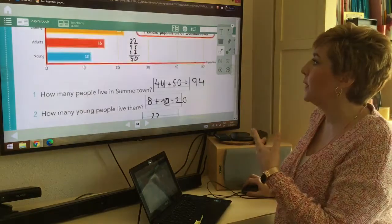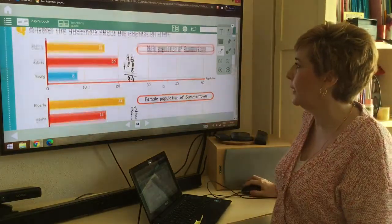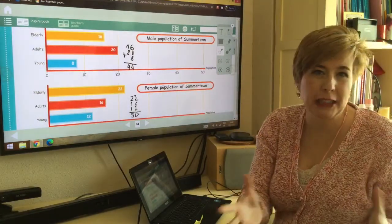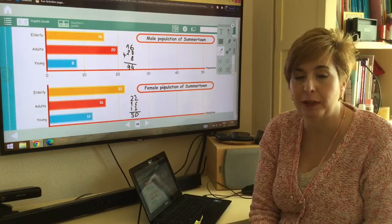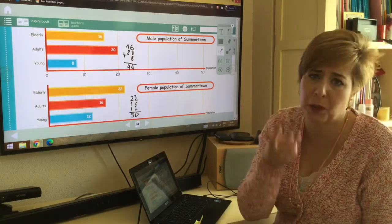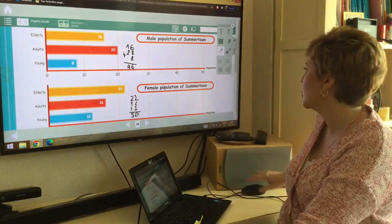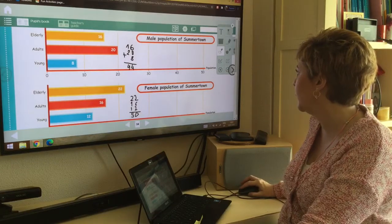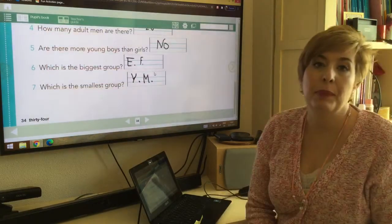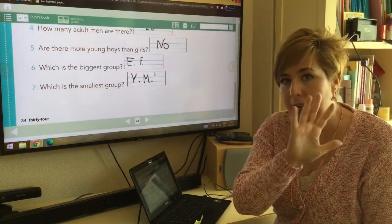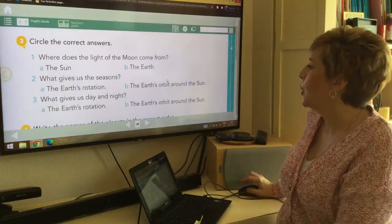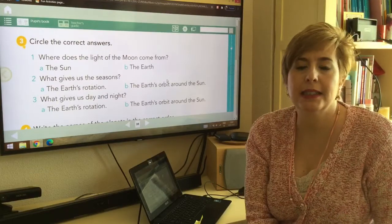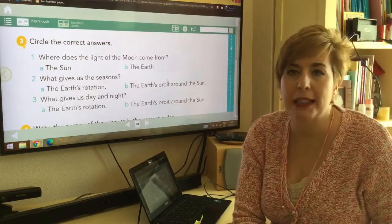Is this clear? So, from this chart that you have here, you can get lots and lots of information about a population of a place. This you will do in year three, four, five, and six. So, don't panic if you think it's difficult. Page thirty-five.